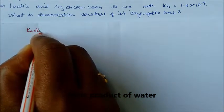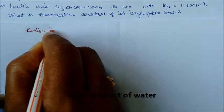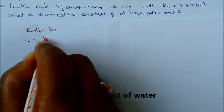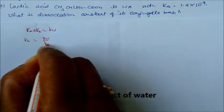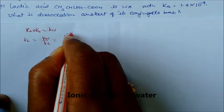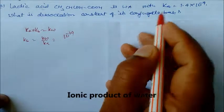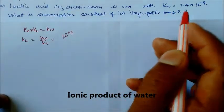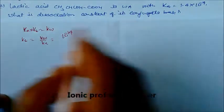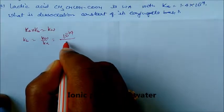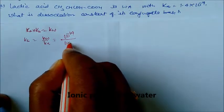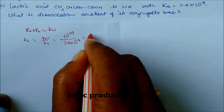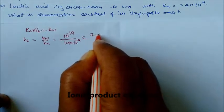Kb will be Kw divided by Ka. Kw at 25°C — if nothing is given, the temperature is assumed to be 25°C by default, so Kw = 10⁻¹⁴. Ka is 1.4 × 10⁻⁴. So the answer will be 7.4 × 10⁻¹¹. This is our answer.